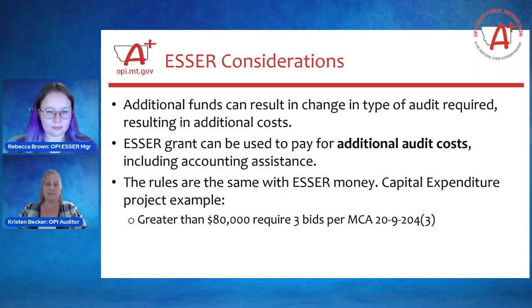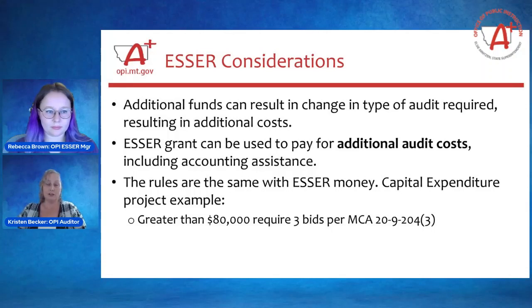Accounting rules aren't changed due to the receipt of ESSER money. But we would like to mention, for example, capital expenditure projects. These are expenditures that we see several findings each year for. If a project is going to be greater than $80,000, law requires three bids. This protects us from any kind of lawsuit or legal ramifications. If for some reason you're unable to get three bids, be sure to always document this and why you were unable to acquire those three bids.